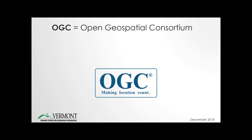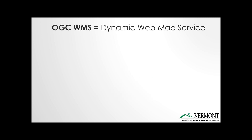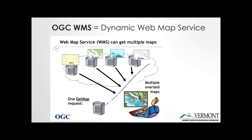OGC stands for the Open Geospatial Consortium. They are the group that sets standards and protocols for open source GIS solutions. OGC WMS stands for dynamic web map services. A web map service, or WMS, allows for the streaming of multiple layers of geographic information across the web to a desktop, mobile, or browser-based client.